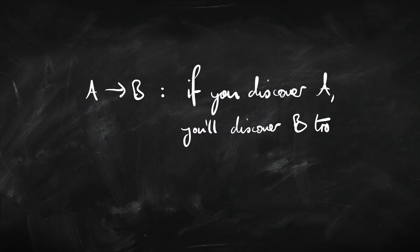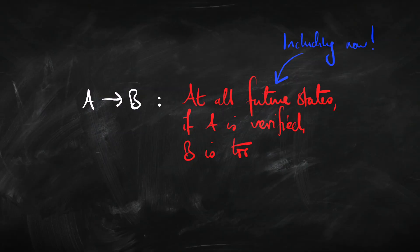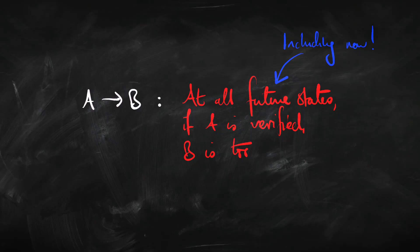Let's look at the arrow first. "If A then B" basically means: if at some point you discover A, you're thereby going to discover B — whenever you get A, you also get B. More precisely, imagine you're in a particular state of that investigation. Looking forward to all the states you might end up in, you never see an A without a B. That's what it takes for "if A then B" to be verified in your current state: going forward, including the current state, you never get an A without a B.